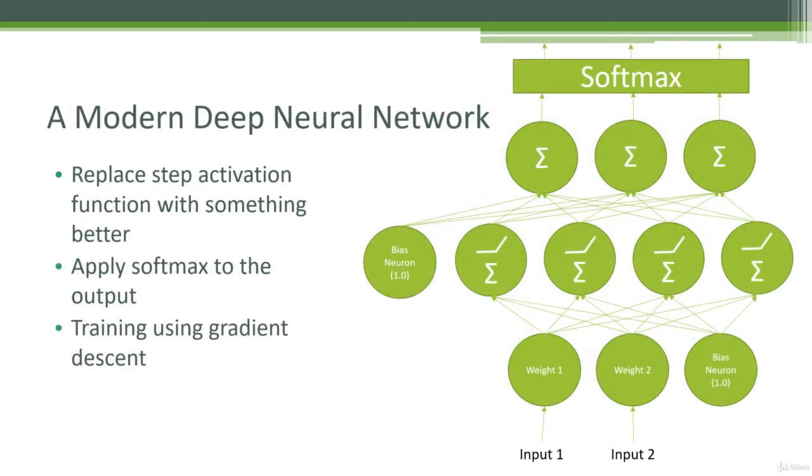Finally, we'll talk about a modern deep neural network and really this is all there is to it. The rest of this course, we're just going to be talking about ways of implementing something like this. So all we've done here is we've replaced that step function with something better. We'll talk about alternative activation functions. This one's illustrating something called ReLU that we'll talk about later. The key point there though is that a step function has a lot of nasty mathematical properties, especially when you're trying to figure out their slopes and their derivatives.